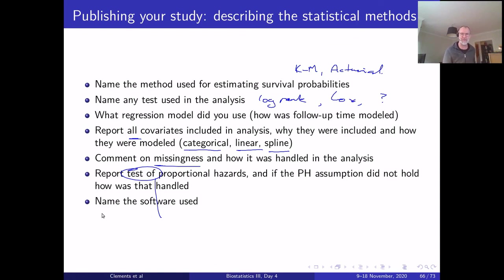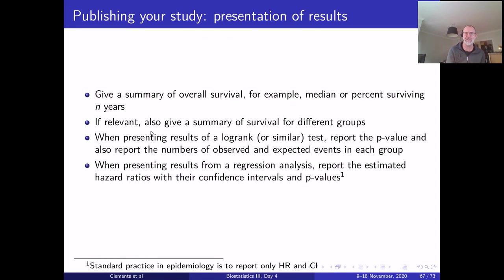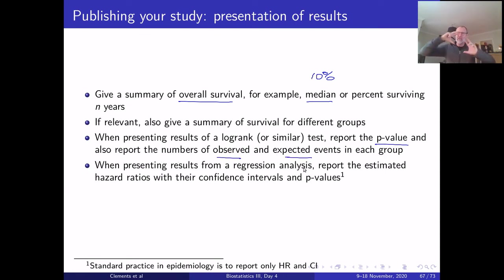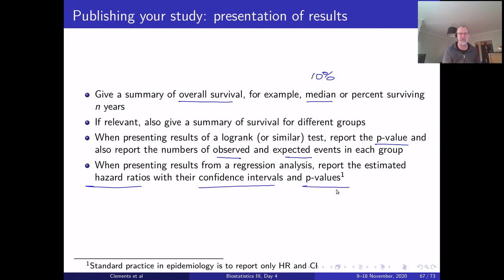For presentation of results: give a summary of overall survival such as median survival or proportions surviving five or ten years. Give survival summaries for different groups if relevant. When presenting log-rank or Wilcoxon tests, report the p-value and the numbers of observed and expected events to convey the direction of the effect. For regression analyses, report the estimated hazard ratios with confidence intervals and p-values.